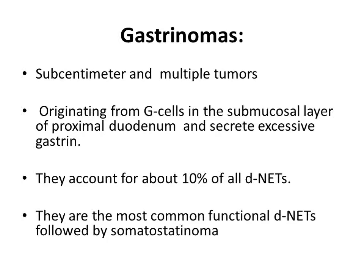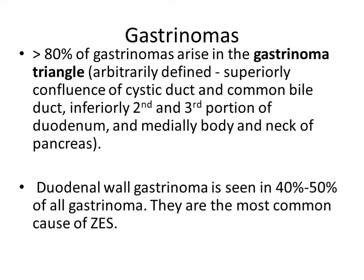Gastrinoma is a sub-centimeter, multiple tumor originating from G cells in the submucosal layer of the proximal duodenum and secretes excessive gastrin. They account for about 10% of all DNETs. They are the most common functional DNET, followed by somatostatinoma. More than 80% of gastrinomas arise in the gastrinoma triangle, and duodenal wall gastrinoma is seen in 40 to 50% of all gastrinomas. They are the most common cause of Zollinger-Ellison syndrome.